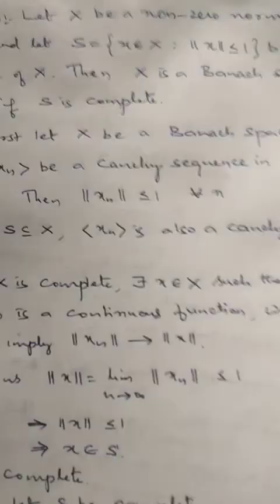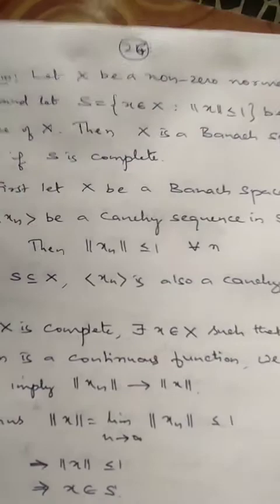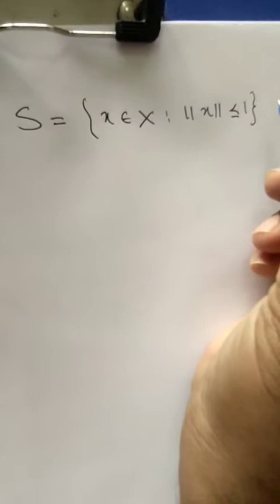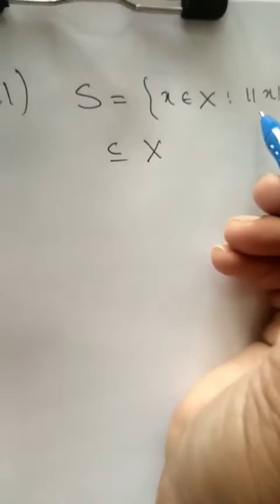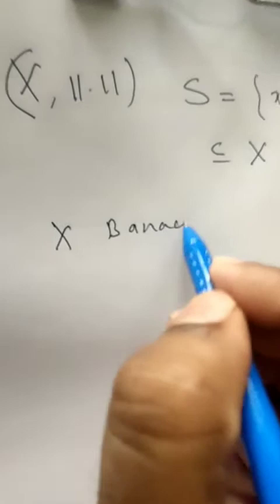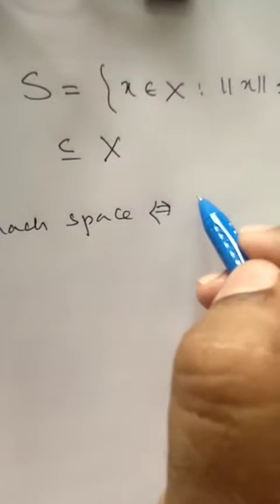Let us come to the next theorem. Suppose X is a non-zero norm linear space. Suppose we have the set S equal to the set of all x belonging to X such that norm of x is less than or equal to 1. This is geometrically the unit disk in X. We are going to prove that X is a Banach space if and only if this set S is complete.